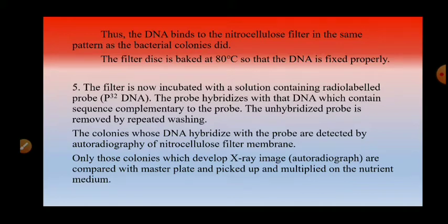This nitrocellulose membrane is then incubated in a solution containing radio-labelled probes — a DNA sequence which is an oligonucleotide having P32-labelled radioisotope and containing a sequence complementary to the desired DNA. The probe will hybridize with that DNA which contains sequence complementary to the probe. Unhybridized probes are removed by repeated washing.